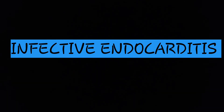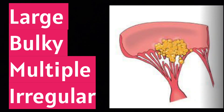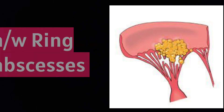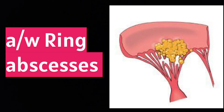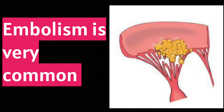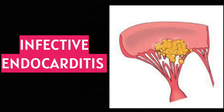Secondly, infective endocarditis. Vegetations are large, bulky, multiple, and irregular, found on the valve cusps and less often on mural endocardium. They are seen on the peripheral aspect and are associated with ring abscess. They are non-sterile — bacteria are present. Embolism is very common in infective endocarditis.